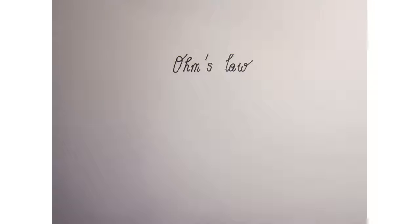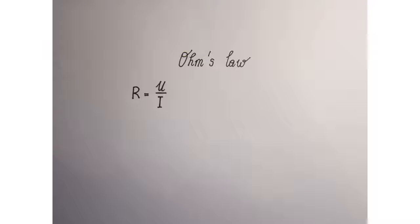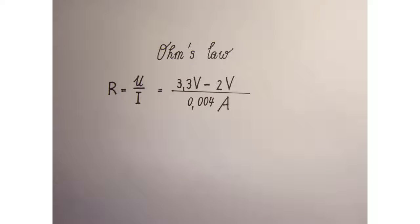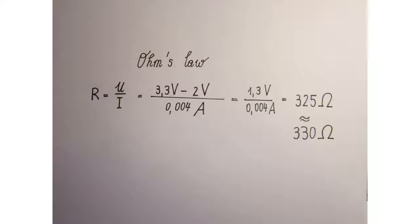We need to use Ohm's law to calculate which resistor we need. R is U divided by I, which means resistance is voltage divided by amperage. We need to calculate the difference of the voltage that comes from the GPIO pins and the voltage of the LED, then divide this by 4mA. The solution is 320 ohms. Since there is no resistor with this value, we need to use the next highest available value, which is 330 ohms.